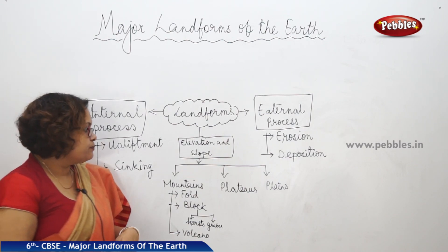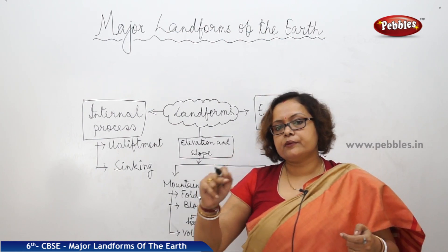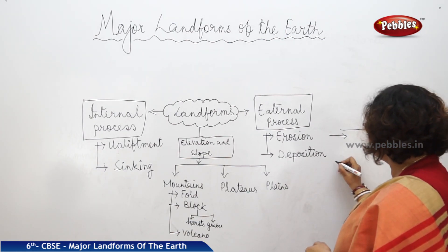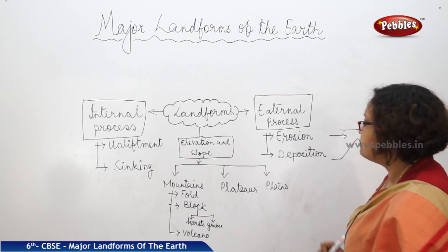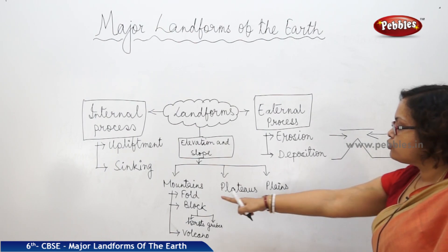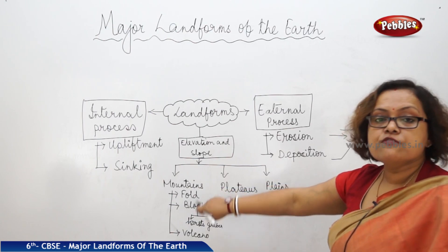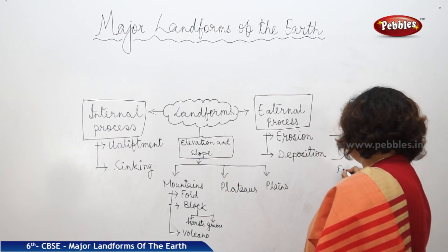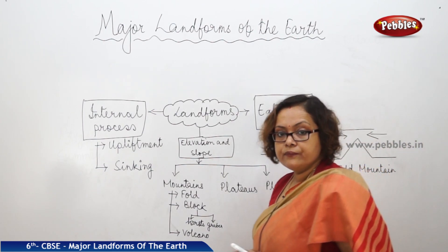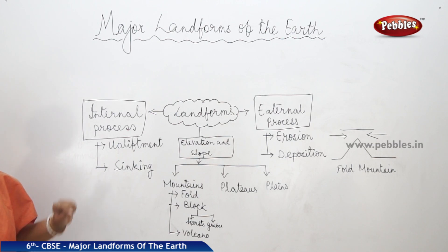What is a fold mountain? Suppose you have a plain piece of paper and you push it from both sides — the middle part comes up. Similarly, if a plain surface has pressure from both sides, the middle part is uplifted. This is the internal process of upliftment working in the formation of fold mountains. Examples of fold mountains include Mount Everest, the Himalayas, and the Aravalli range — all results of the internal process of upliftment.